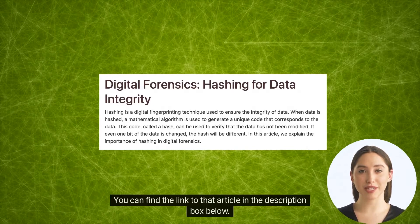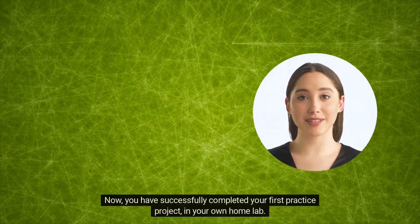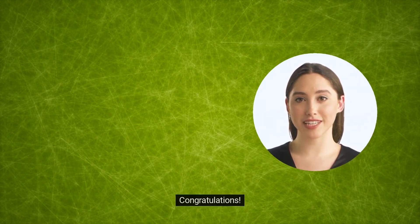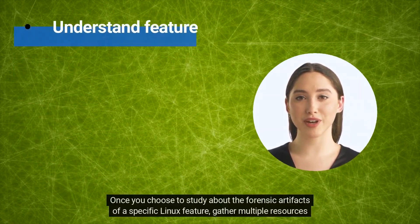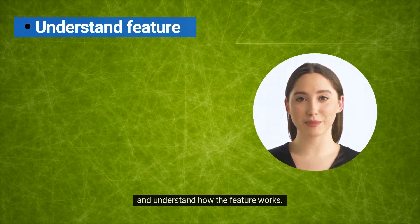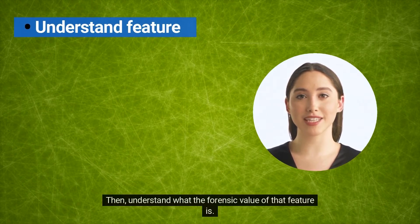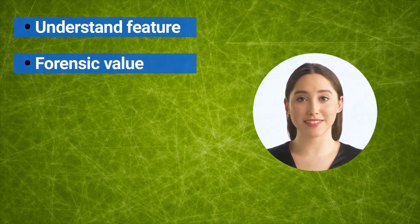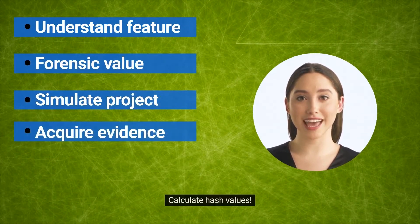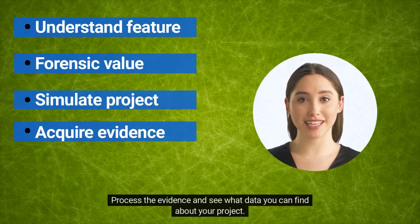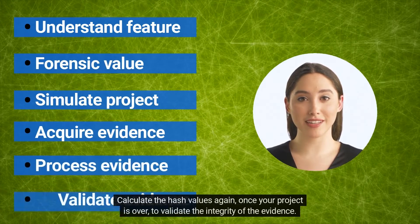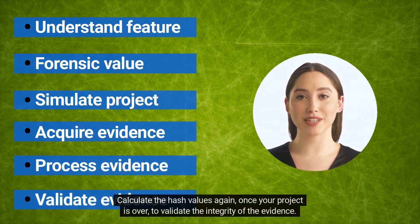You have now successfully completed your first practice project in your own home lab — congratulations! Once you choose to study the forensic artifacts of a specific Linux feature, gather multiple resources and understand how the feature works, then understand its forensic value. Simulate a project in your lab: acquire the evidence, calculate hash values, process the evidence, and see what data you can find. Calculate the hash values again once your project is over to validate the integrity of the evidence.